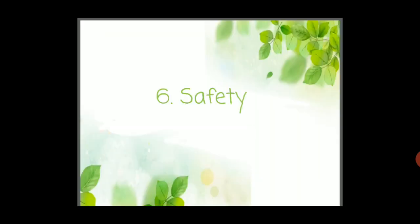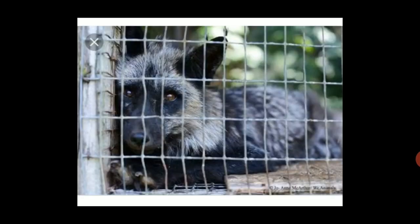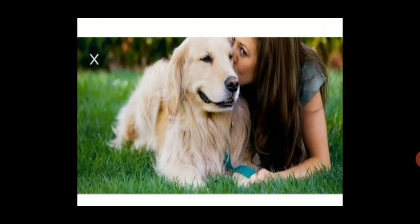Sixth point is safety. Though animals are very useful to us, some human beings kill them or cage them for their own benefits — that is very bad. If someone caged you, would you like it? No. Just think: if you are kept in a cage, how would you feel? We should not cage animals. We should always love them and take care of them. It's our duty. We should not kill or hurt them, as they are the most beautiful gift of nature.